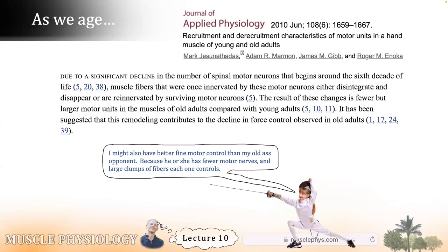Turning to motor unit loss as we get older — past our 50s, when we're losing motor neurons, some muscle fibers left behind may disintegrate, but others are picked up by axonal sprouting. What we see in older adults is fewer total motor units, but each motor neuron may have more total fibers because surviving neurons have accumulated fibers over the years. Many of those fibers will be neighbors rather than distributed throughout the tissue, meaning older adults may have worse fine motor control owing to this motor unit composition.